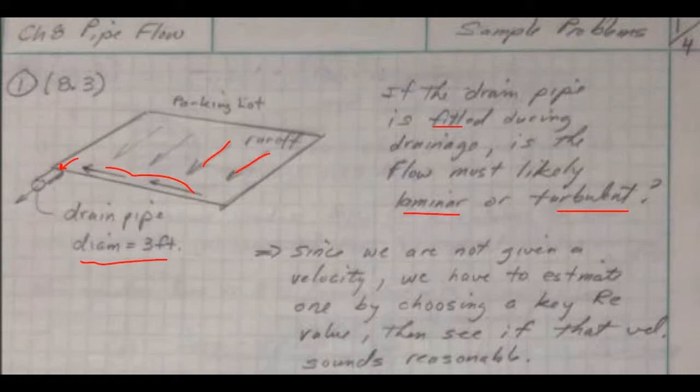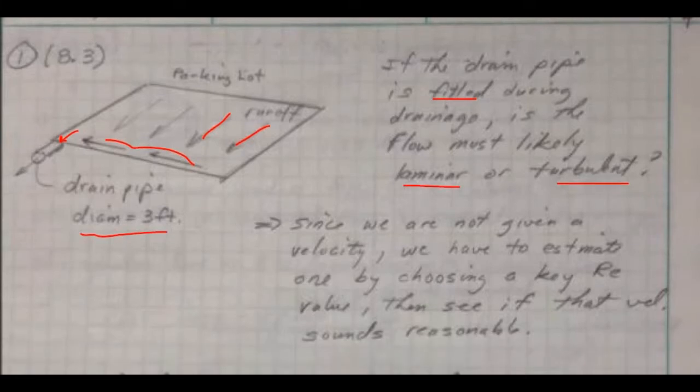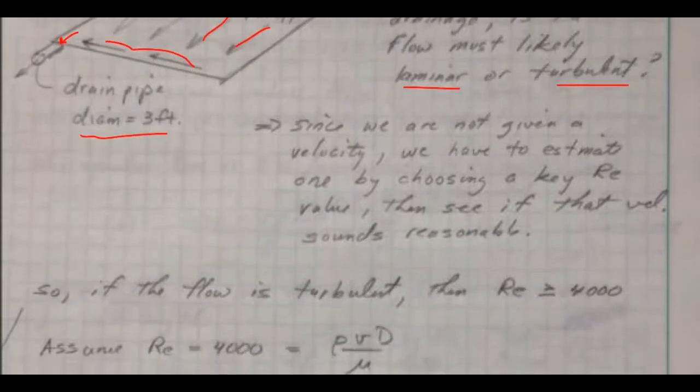And it's also important to note that this is a filled pipe, because as you'll see when we get to chapter 10, when you have things that are not full, it's a lot more complicated because you've got that air-side boundary.